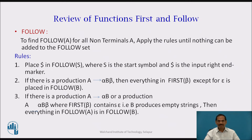To find FOLLOW for all non-terminals A, apply the rules until nothing can be added to the follow set. Place dollar in FOLLOW(S) where S is the start symbol and dollar is the input right-end marker. If there is a production A produces alpha B beta, then everything in FIRST(beta) except epsilon is in FOLLOW(B). If there is a production A gives alpha B beta where FIRST(beta) contains epsilon, or A gives alpha B, then everything in FOLLOW(A) is in FOLLOW(B).